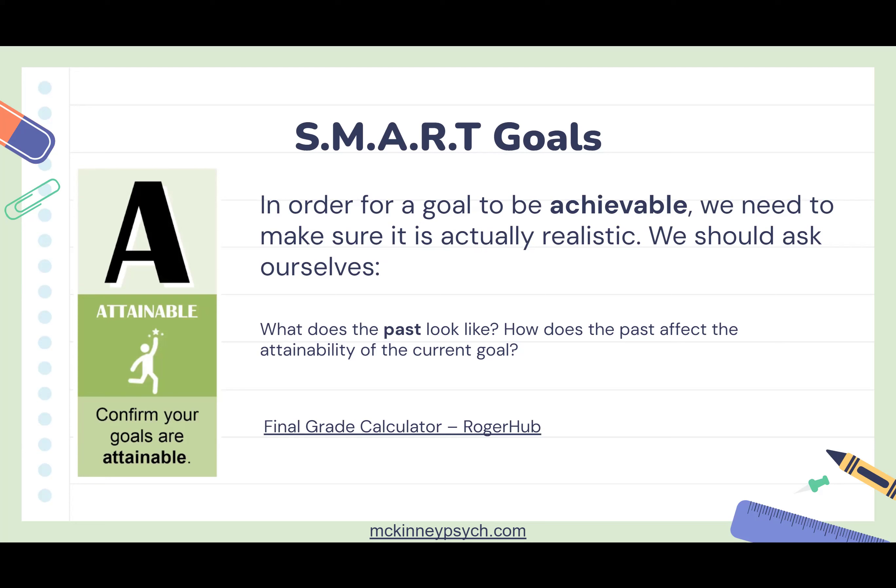If we put this into a final grade calculator — with a current grade of 60, wanting a 90, and the final worth 25% — the calculator tells you that you actually need a 180 on your final, which just isn't attainable. So you need to adjust your goal to fit your limits and circumstances. You can't change that you're at a 60 or that your final is worth 25%.